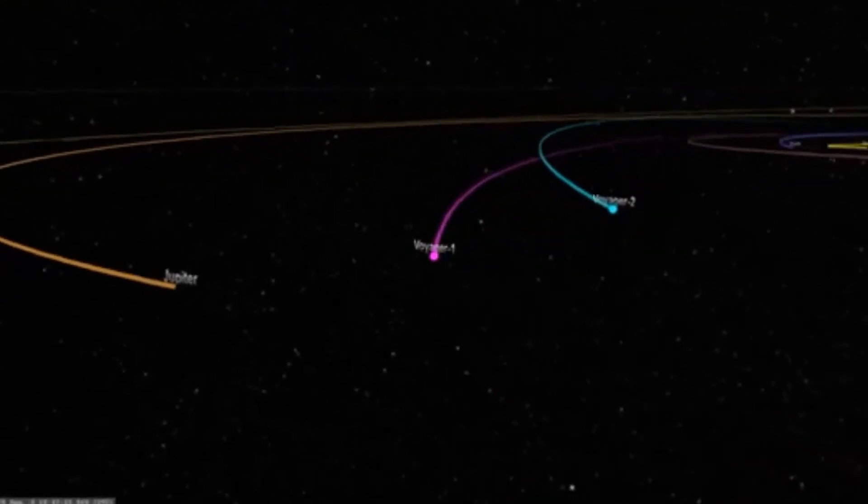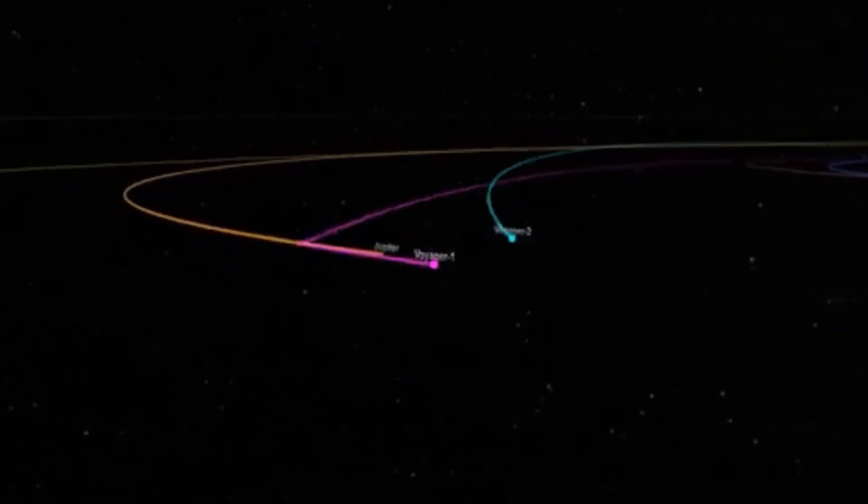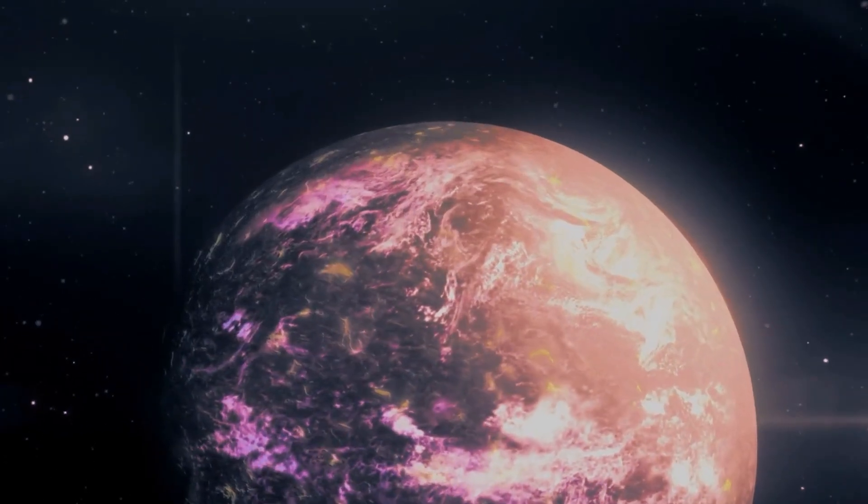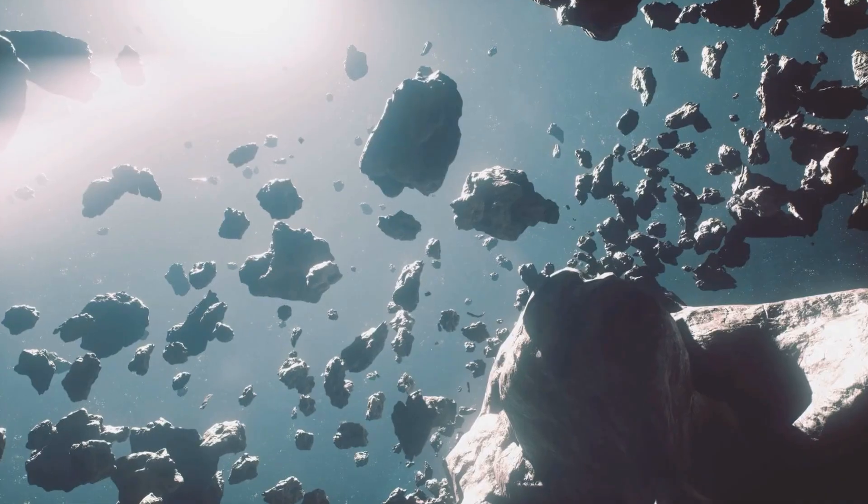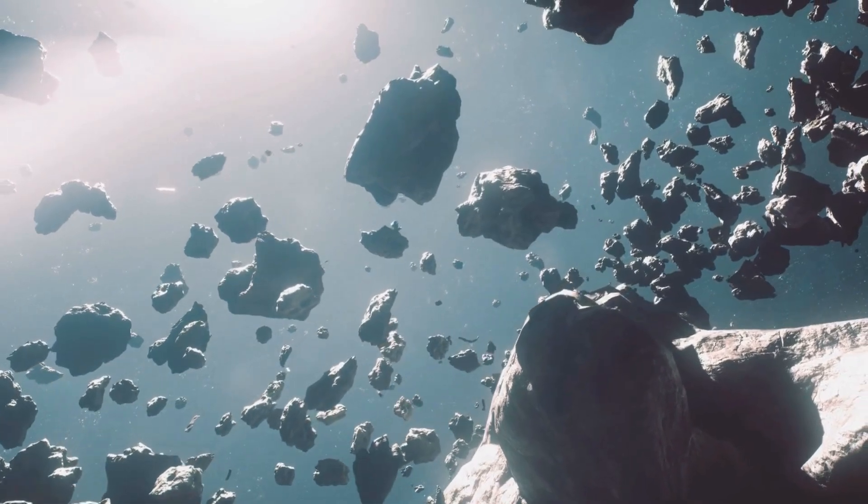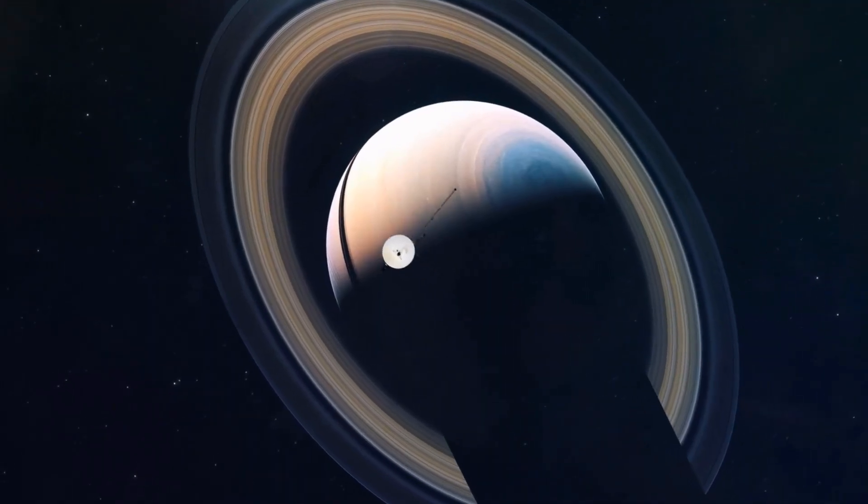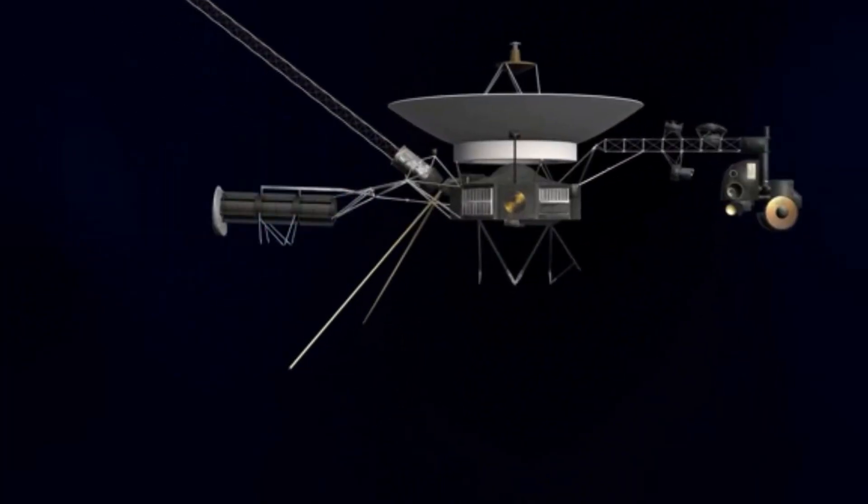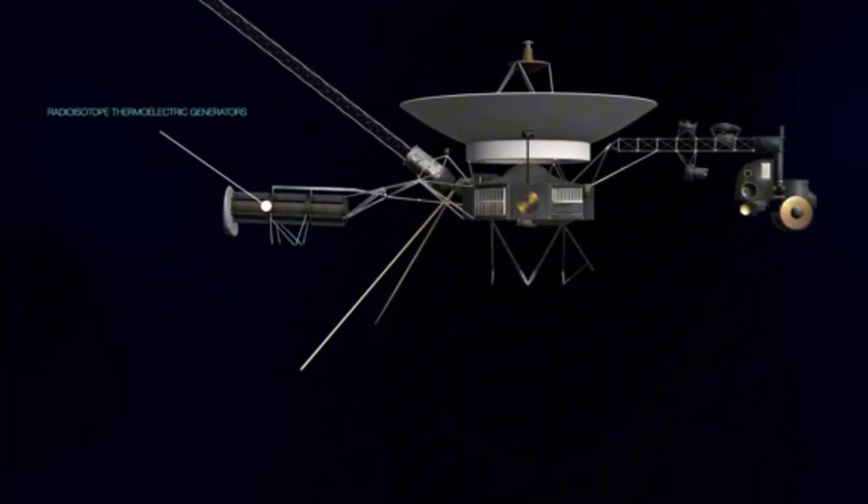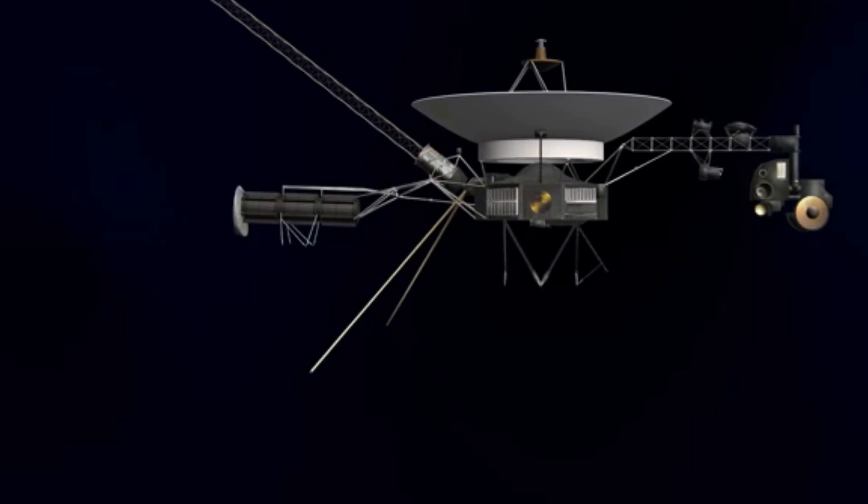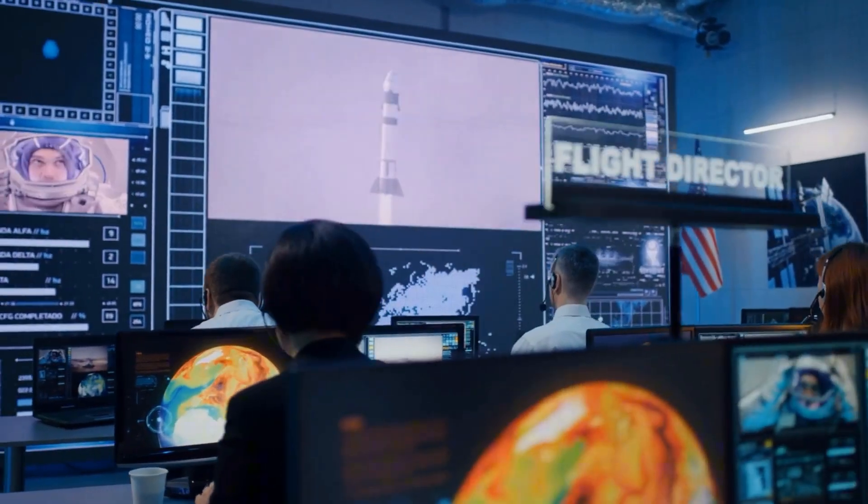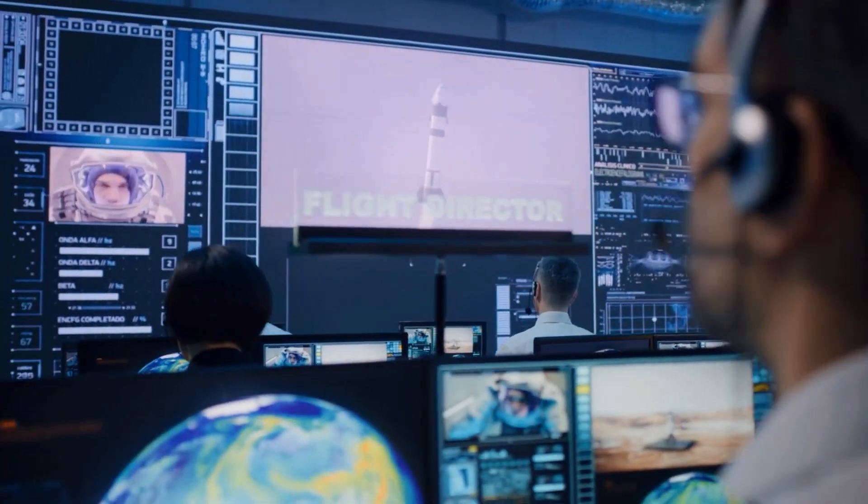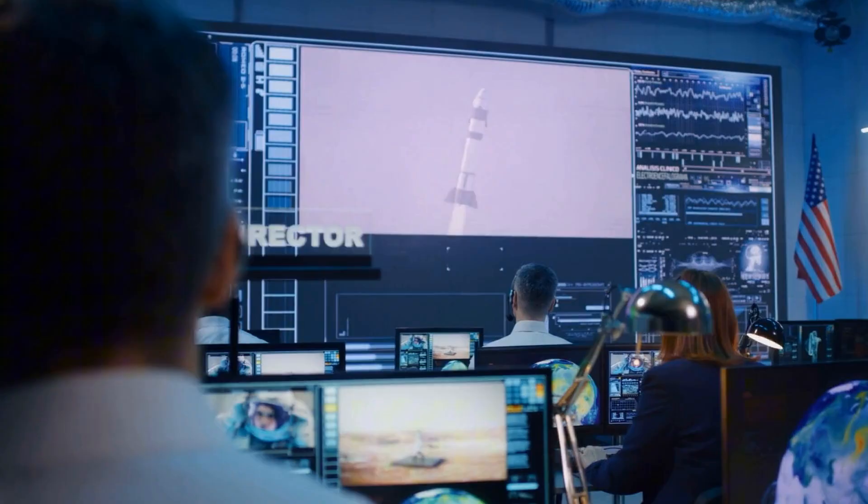The voyage to Jupiter required traversing a distance ten times from Earth to Mercury and navigating the perilous asteroid belt, a challenge previously undertaken by the Pioneer 10 and 11 probes. Equipped with just 69 kilobytes of memory, a mere fraction of a modern smartphone's capacity, the onboard computers had to autonomously manage the complexities of this extraordinary mission.